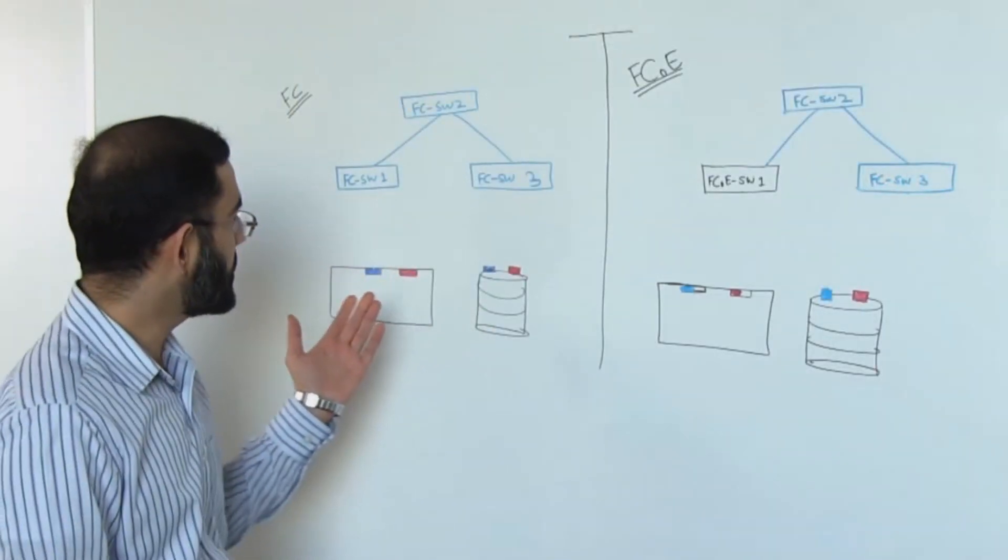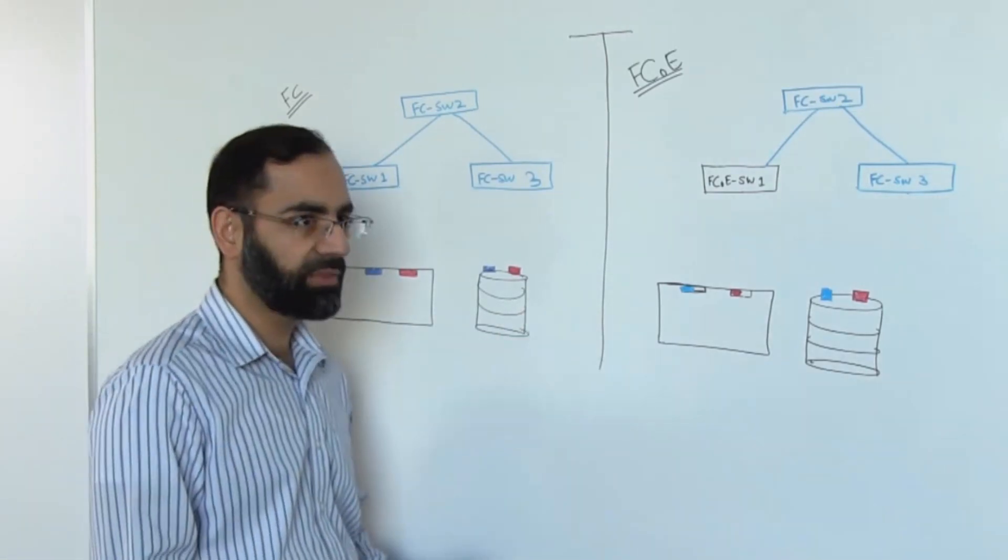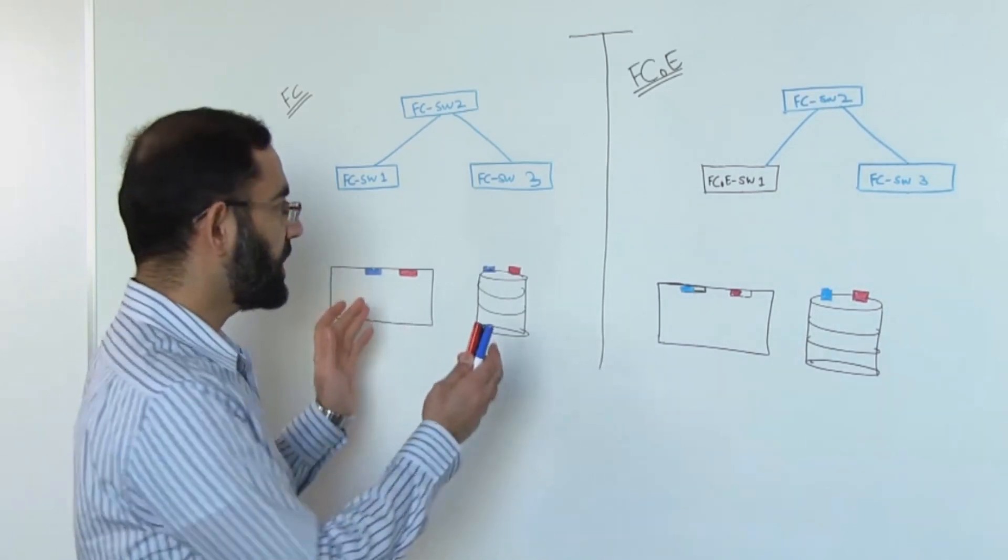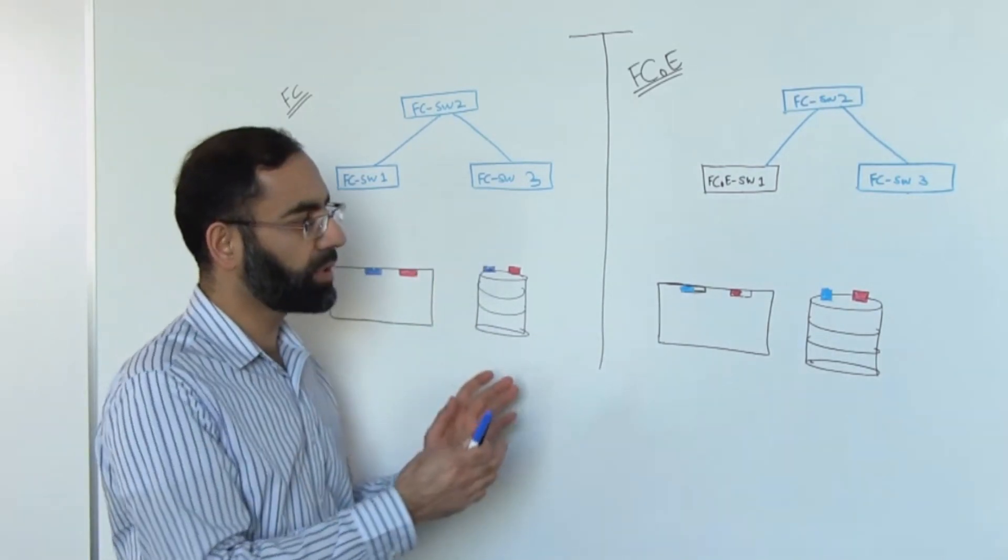I have drawn a couple of diagrams here, one depicting an FC network and another one showing an FCoE environment. I'm going to walk you through different names for the switches, their ports, adapters, and hopefully this will explain a few things as you get comfortable with this.